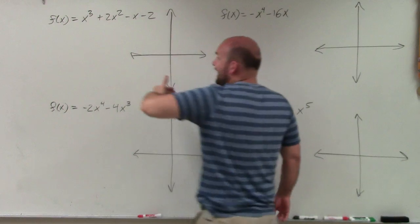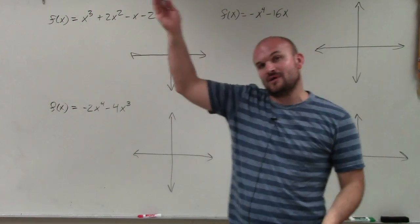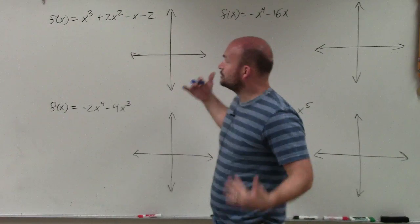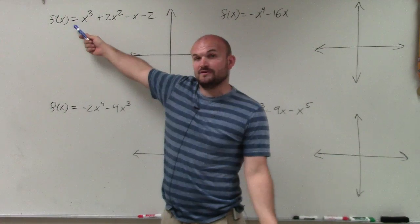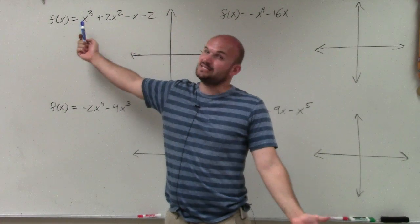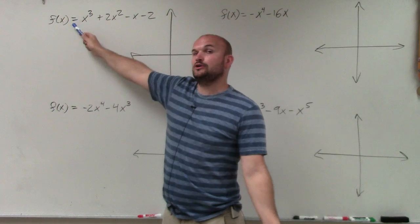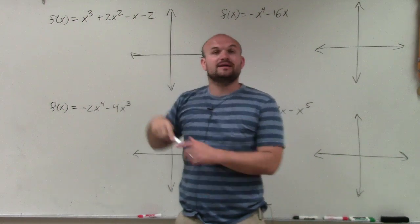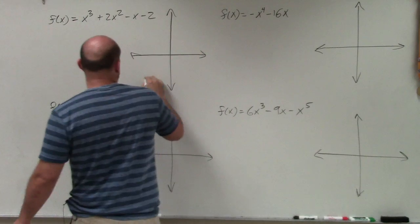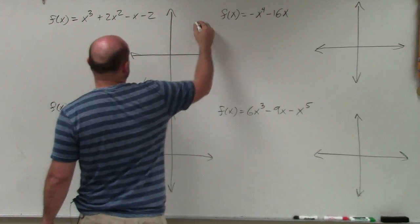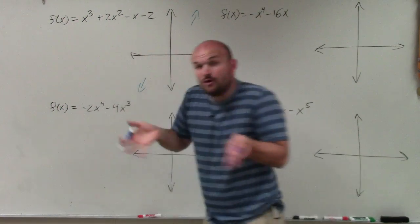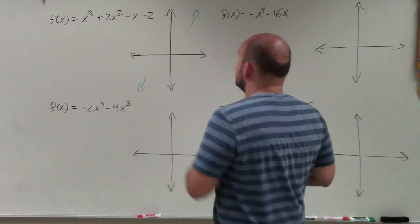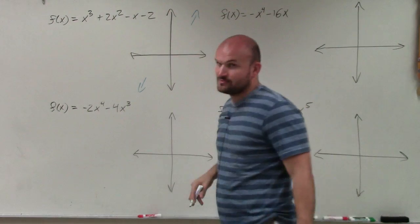Since that degree is odd, we know that the graph is either going to fall left and rise right, or rise left and fall right. To determine which, we look at our leading coefficient, which in this case is a positive 1. Since that leading coefficient is positive and our degree is odd, we know that the end behavior is going to fall left, rise right. I have no idea what the rest of this graph is going to look like, but all I know is the graph falls left and rises right.